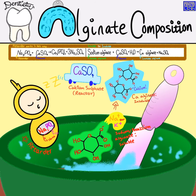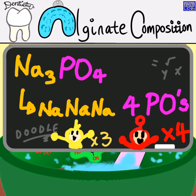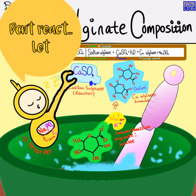To remember this better, you can say: 나나, 나나, four, 포. So 나나, three, 나나, and four, 포. So: 나나, 포 — tri-sodium phosphate. She is very sleepy, so she is retarding the reaction.